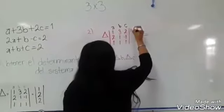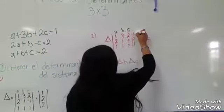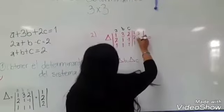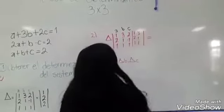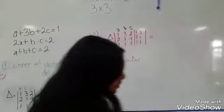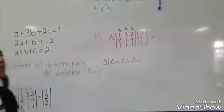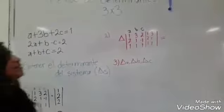Entonces pondríamos los valores de A: 1, 2, 1; y de B: 3, 1, 1. Y entonces aquí viene lo más importante para poder multiplicar.